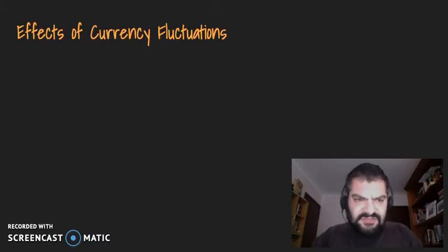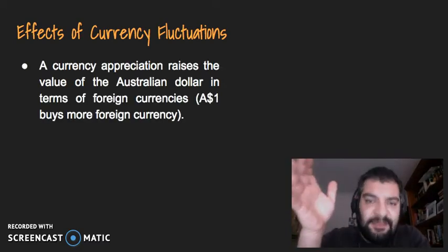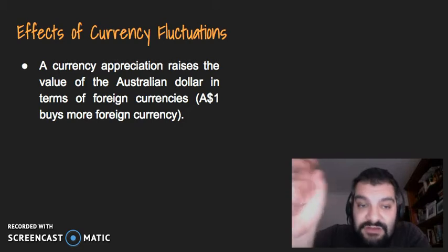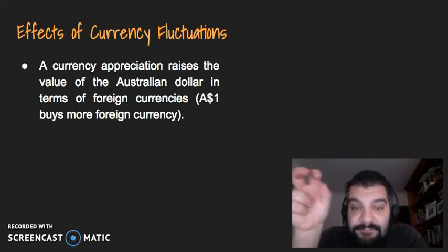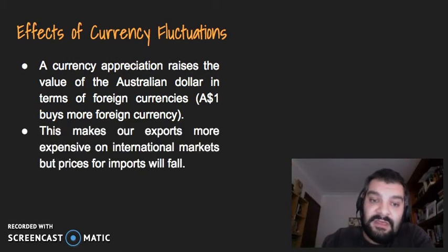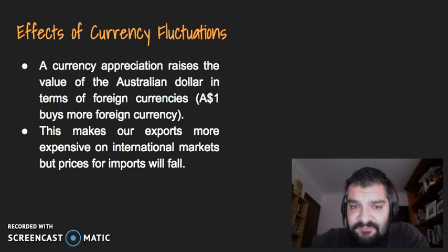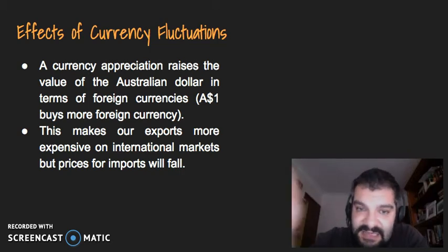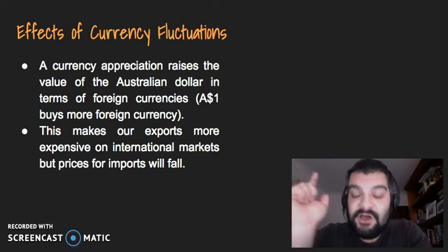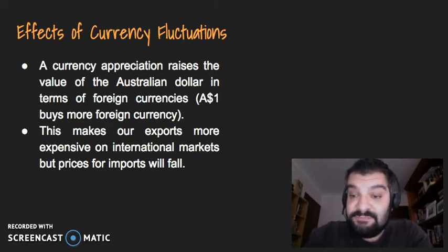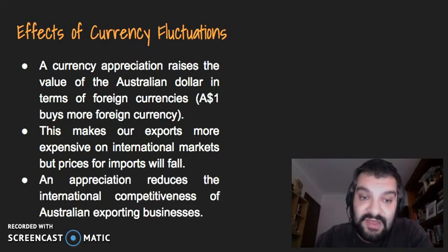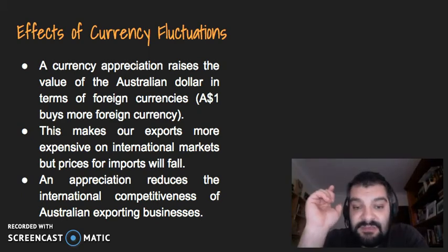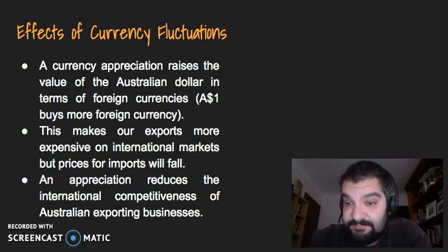What are the effects of a currency fluctuation? A currency appreciation raises the value of the Australian Dollar in terms of foreign currencies, so one Australian Dollar is going to buy more foreign currency. This makes our exports more expensive on international markets, but prices for imports will fall. So if we're selling stuff overseas, an appreciation will make our products more expensive to buy overseas. An appreciation actually reduces the international competitiveness of Australian businesses trying to sell overseas.